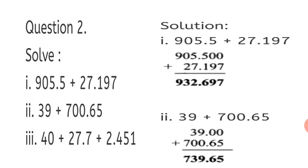First sum, 905.5 plus 27.197. So, arrange the numbers properly. Point should come below point when adding and the numbers to its left are written to the left and number to its right are written to the right. Now, 905.5 we had. We add 2 zeros so that we can equalize the numbers. Now, you add 0 plus 7, 7. 0 plus 9, 9. 5 plus 1, 6. Decimal point as it is comes down. 5 plus 7, 12. 2 and 1 carried over. 2 plus 1, 3. And 9 as it is. So, 932.697 is your final answer.